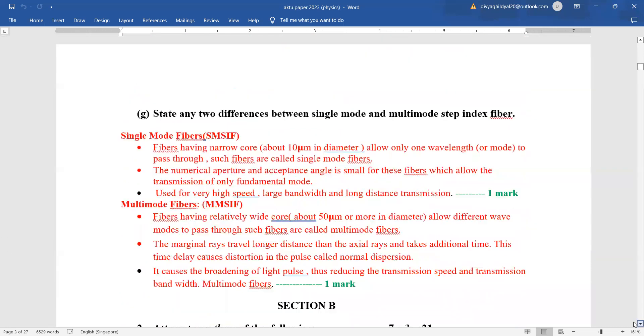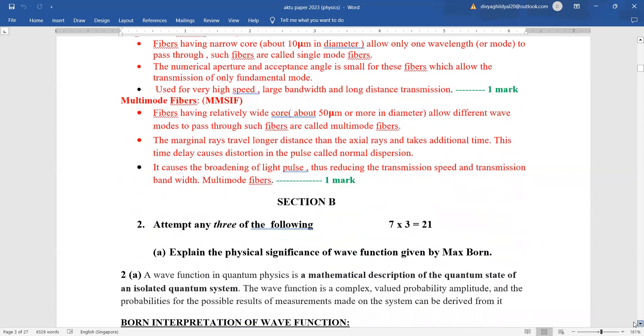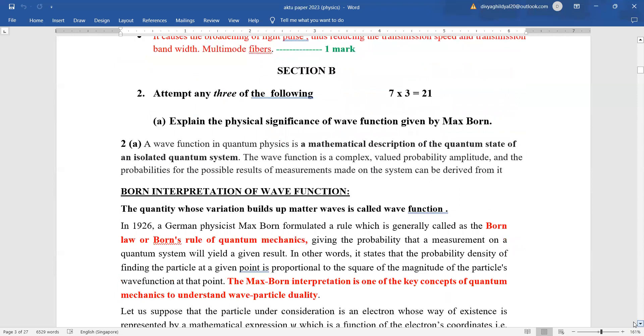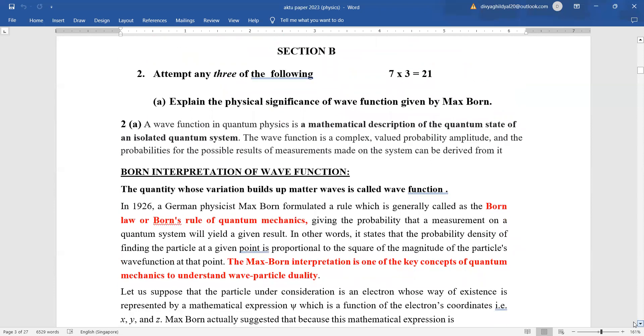Any two differences between single mode and multimode step index fiber. Single mode fiber has narrow core of 10 micrometer in diameter and is used for high speed, large bandwidth and long distances. Whereas multimode fibers have wide core of 50 micrometer in diameter and causes the broadening of light pulse, reducing the transmission speed and transmission band. Now this question was a bit away from what they usually ask.